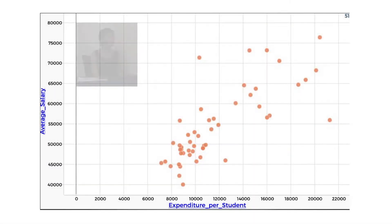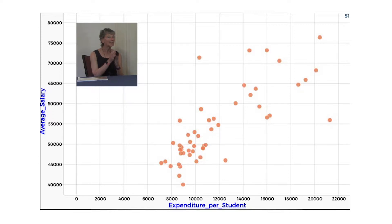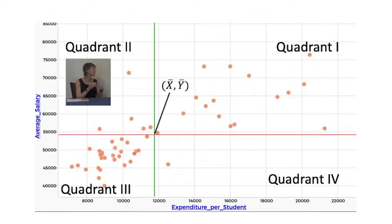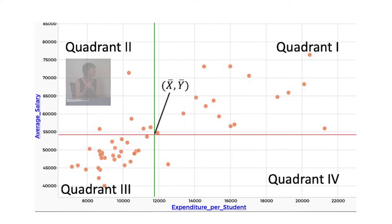We want students to be able to start thinking conceptually: I have this scatter plot in front of me, I see this clustering of points, I see this trend — how can I go further to more quantify that? A natural thing to do is to divide the scatter plot into four regions and think in terms of quadrants. Once you divide that scatter plot into four regions using the mean lines for x and y, if you have a positive trend, your points are starting to cluster in quadrant one and quadrant three. If you have more of a negative trend, they're clustering in quadrants two and four.